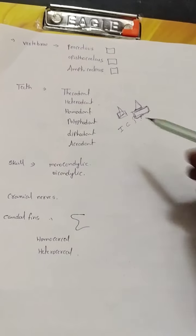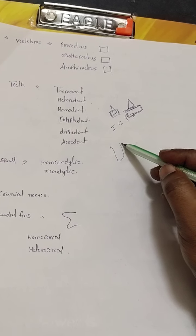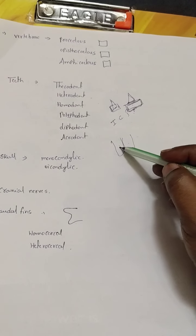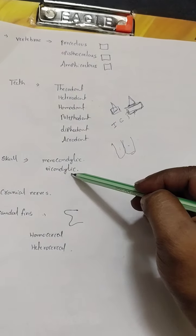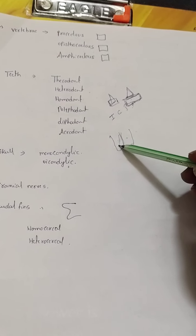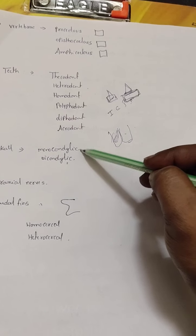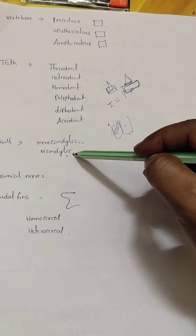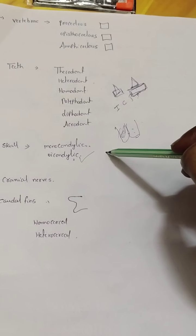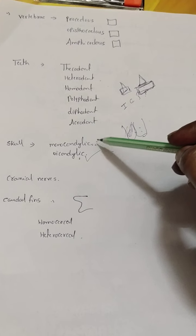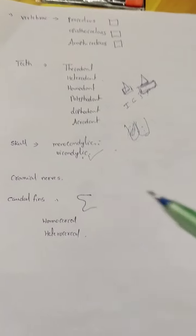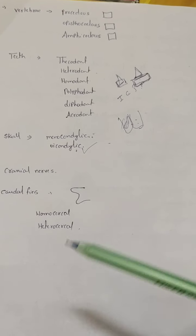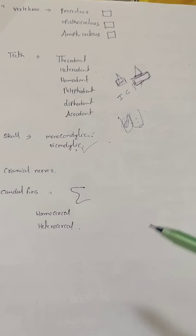Regarding the skull, condyles are present near the neck region at the back. If an organism has two condyles, that type of skull is called a dicondylic skull. If it has only one condyle, it is called a monocondylic skull. Amphibians and mammals have two condyles — dicondylic skull — while all remaining organisms have a monocondylic skull. For cranial nerves, nerves that arise from the brain are called cranial nerves; in humans, 12 pairs of cranial nerves are present.